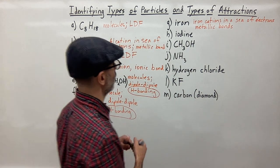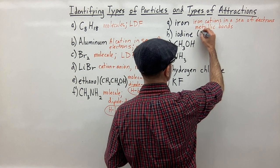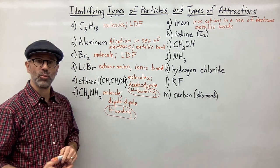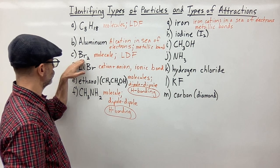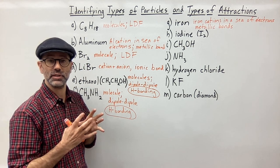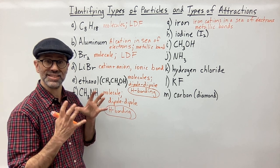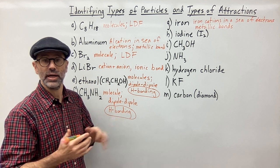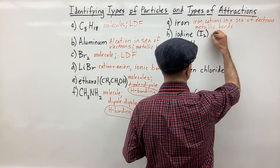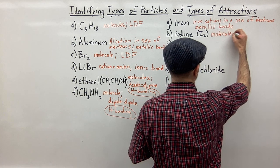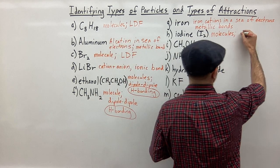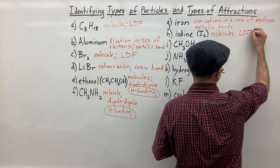For H, iodine — the formula is I2. Just like bromine, iodine has two iodine atoms bonded together. The electronegativity difference between the iodine atoms is zero because they have the same electronegativity, so this is a non-polar bond. We have molecules as the particle, and the attractive force is LDF — London dispersion forces.